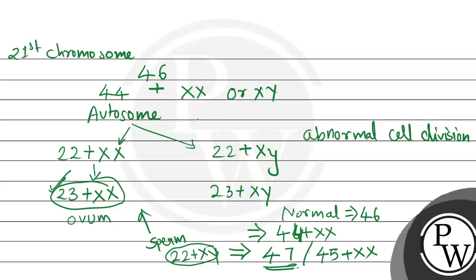Down syndrome has some symptoms which we just discussed: small round head, partial open mouth, and gonads not properly developed. These are the symptoms of Down syndrome.